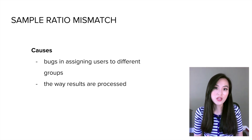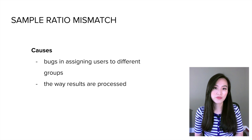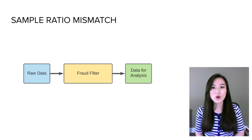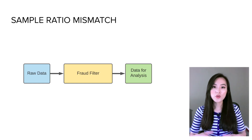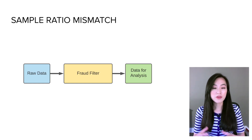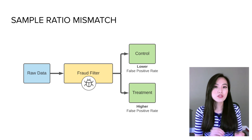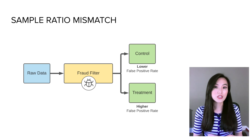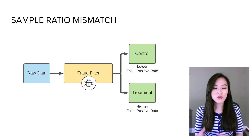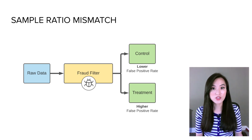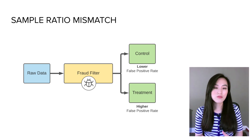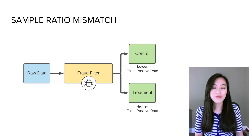It's also possible that the way results are processed leads to sample ratio mismatch. For example, we may have a data pipeline to filter out fraudulent users before analyzing test results, and there is a bug in the pipeline that causes the false positive rate to be different across groups — false positive meaning we incorrectly flag legitimate users as fraudsters. If the false positive rate is higher in the treatment group, this will cause a sample ratio mismatch.